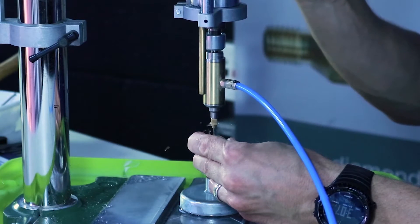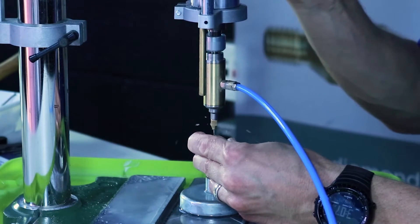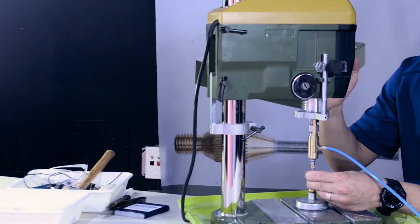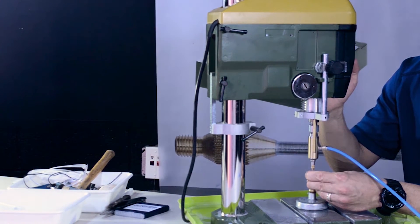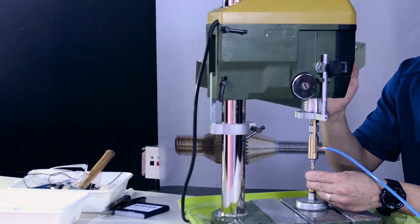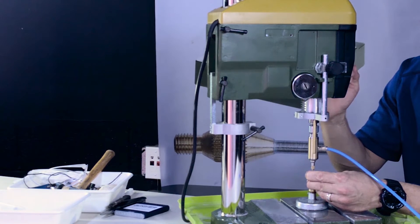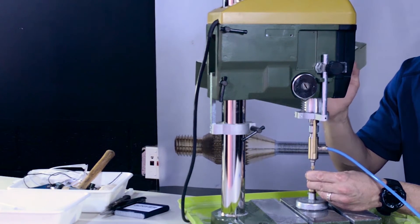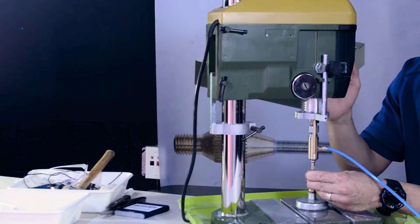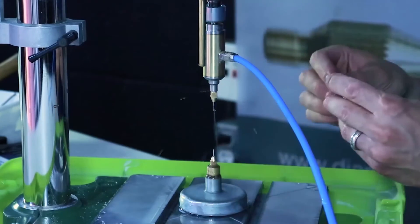The drilling system actually prefers harder stones because harder stones create a core. Softer stones will sometimes create more of a slurry or a bunch of sediment that will sometimes plug up the core, the drill bit, and stop your water. If the water stops you just back out and clean out the drill bit.